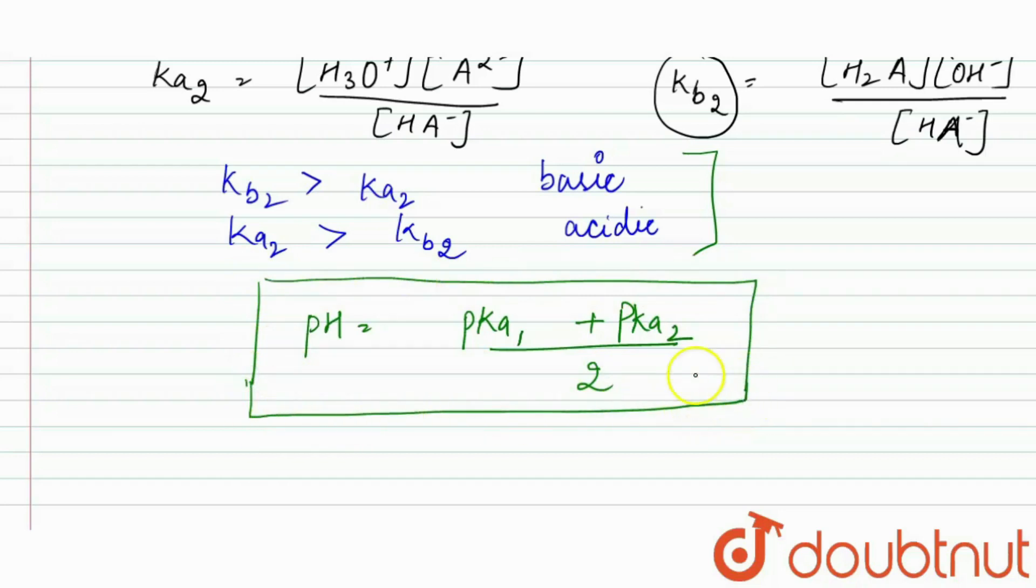We know that in the question we are given with the Ka1 and Ka2 values, so if we want to calculate, we can substitute those values here and calculate the pH. But now it is our required answer because in the options we are given in the terms of pKa1 and pKa2.